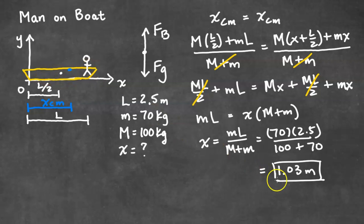So after the person walks all the way to the left, the person will be at a location of 1.03 meters.